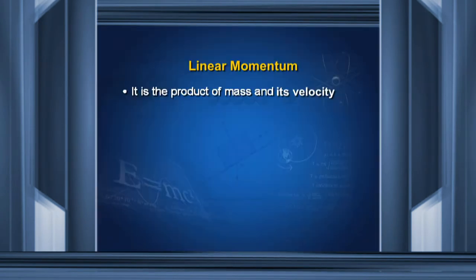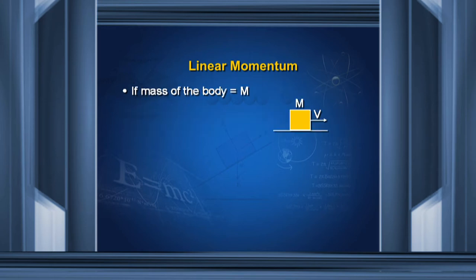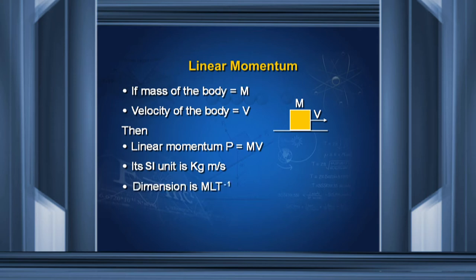Now we will study linear momentum. It is the product of mass and velocity. Since velocity is a vector quantity, linear momentum is also a vector quantity. If we have an object of mass M moving with velocity V, then linear momentum is represented by the symbol P, so P equals M into V. Its SI unit is kilogram meter per second and its dimension is M L T to the power minus 1.